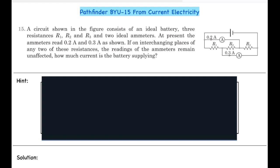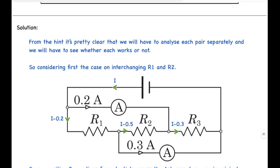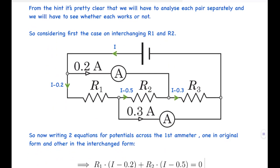If you want to give this question a try you should do it now. Now let's look at the hint. This question is worded not very nicely and many different interpretations can be made from it, but the interpretation we require is that in one circuit we have to consider only interchanging of one pair — you don't have to consider interchanging all three pairs with the same current to the battery.